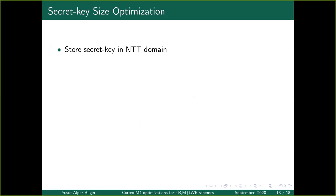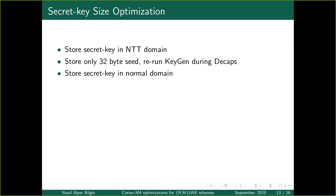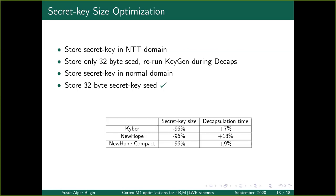The last optimization is secret key size. This is a well-known idea with different options: we can store the secret key in NTT domain, which is currently used for Kyber and NIMHOPE; or store only the 32-byte seed and rerun key generation during decapsulation, which is preferred if secret key size is critical but gives a significant performance penalty. A middle way is storing the secret key in the normal domain. Another method is storing only the 32-byte seed used to sample the secret key. We prefer the last option since our NTT implementation is fast enough. This reduces secret key size by about 96%, but increases decapsulation time by 7% for Kyber, 18% for NIMHOPE, and 9% for NIMHOPE Compact.